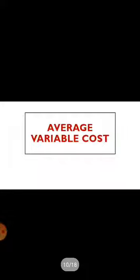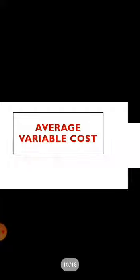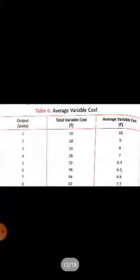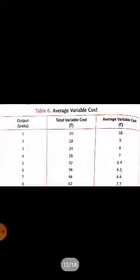Now we have average variable cost. Average variable cost is the per unit cost of variable cost. The formula is: AVC = TVC / Q, where AVC is average variable cost, TVC is total variable cost, and Q is quantity of output. We can understand it through the table. Dividing TVC by output: 10 / 1 = 10, 18 / 2 = 9, 24 / 3 = 8, and so on — this gives us the average variable cost.